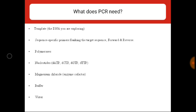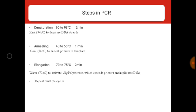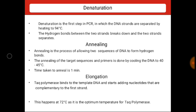Taq DNA polymerase is isolated from the bacterium Thermus aquaticus, and Pfu DNA polymerase is isolated from Pyrococcus furiosus. Vent DNA polymerase is more efficient than Taq DNA polymerase. Fourth are the four deoxyribonucleotide triphosphates: TTP (thymidine triphosphate), dCTP (deoxycytidine triphosphate), dATP (deoxyadenosine triphosphate), and dGTP (deoxyguanine triphosphate). Magnesium chloride buffer and water are also used.